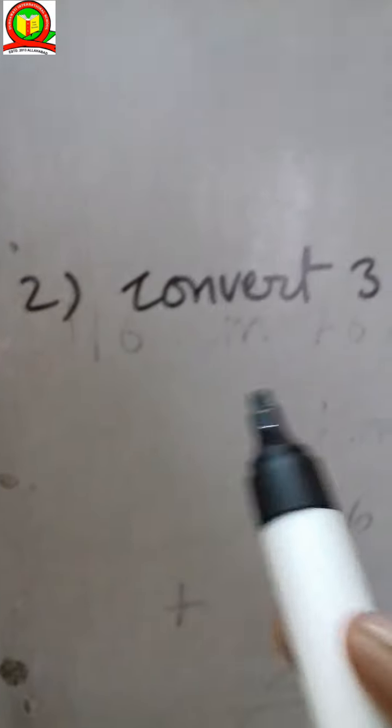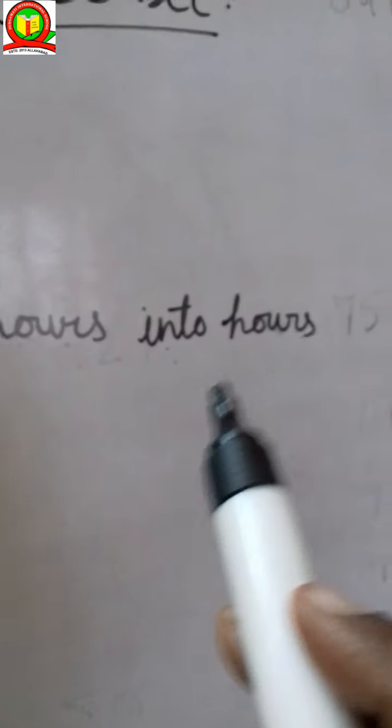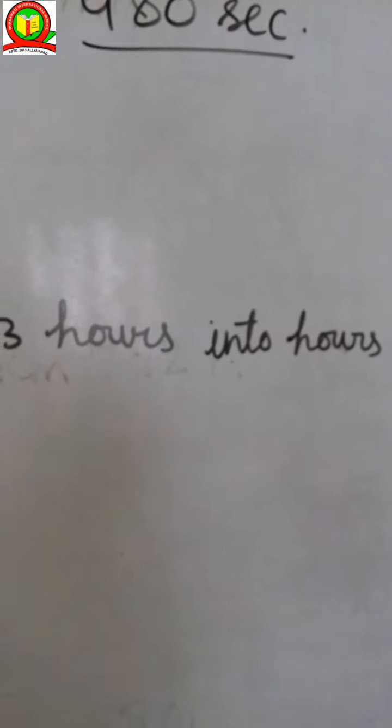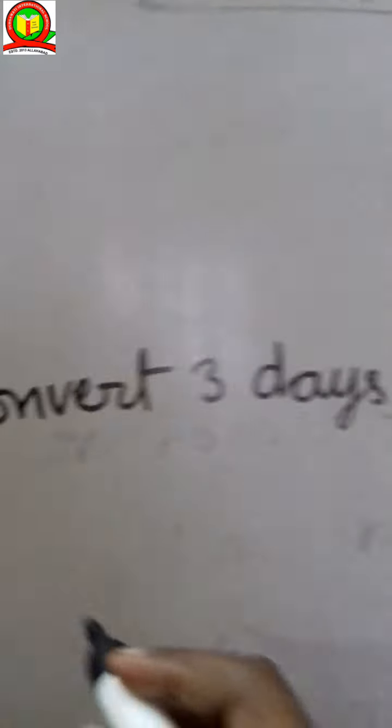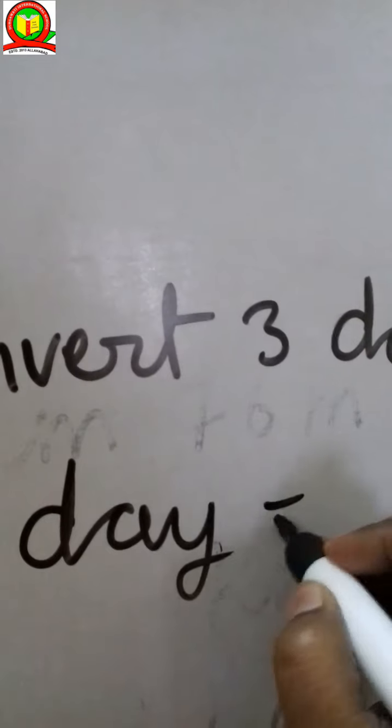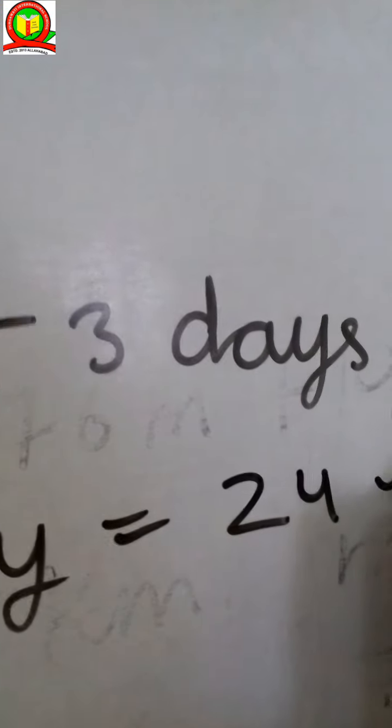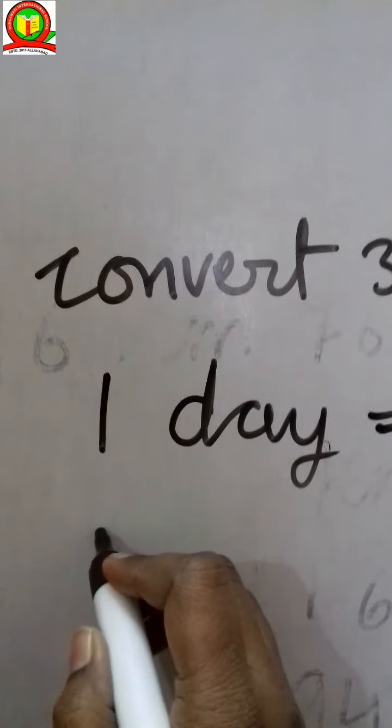Next question is convert 3 days, 23 hours into hours. We have to convert into hours. 1 day is equal to 24 hours.